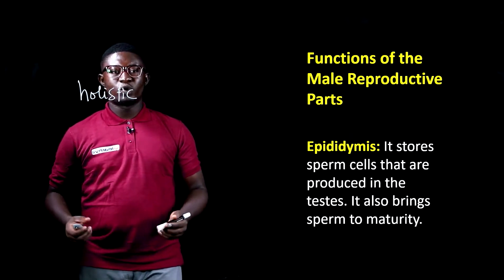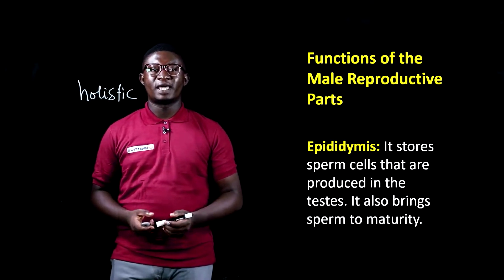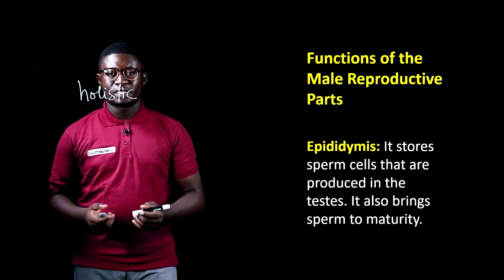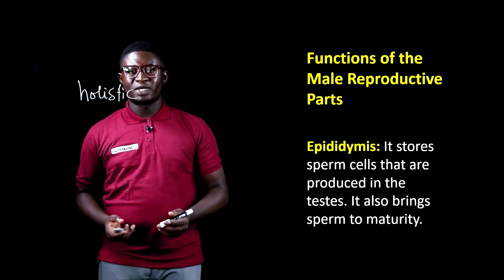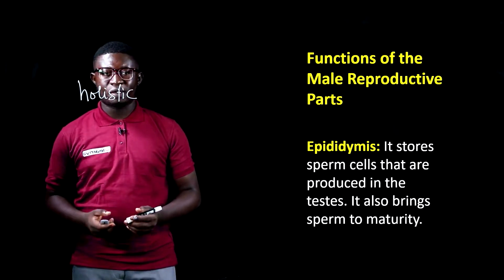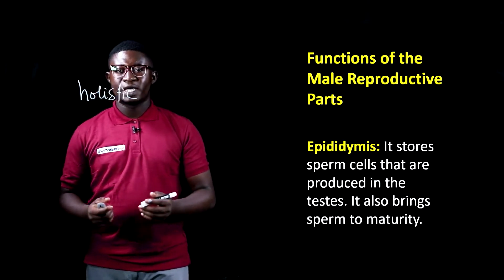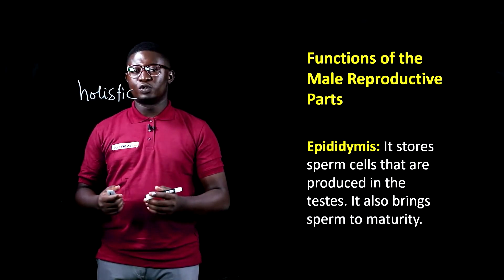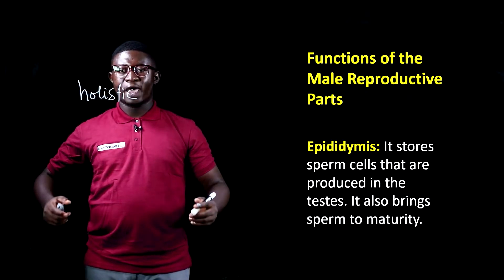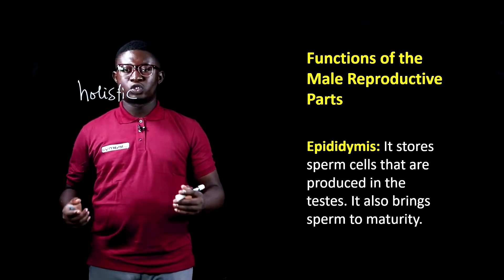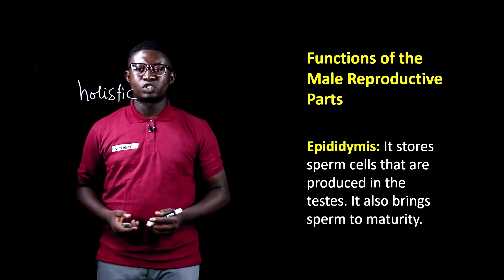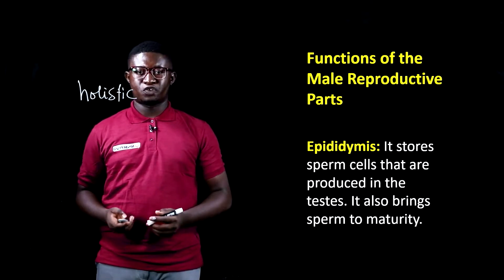The first one we'll look at is the epididymis. The epididymis helps store sperm cells that are produced in the testis. It also helps develop the sperms to full maturity.